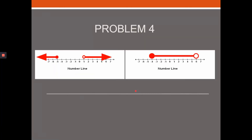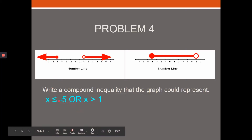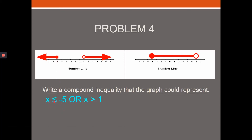Sometimes a number line is given and you write the inequality. If there's no shading in between, think OR. This example gives x less than or equal to negative five — closed circle, bar underneath — or x greater than one — open circle, no bar.